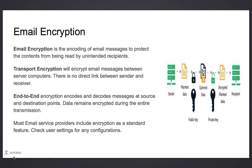Email encryption is the encoding of email messages to protect their contents from being read by third parties. Transport encryption will encrypt email messages between server computers, with no direct link between sender and receiver. End-to-end encryption will encode and decode messages at their source and destination points — the data will remain encrypted during the entire transmission. Most email service providers include encryption as a standard feature, and we should always check user settings for all configurations.